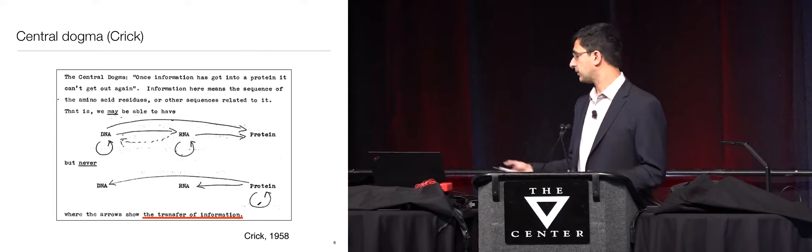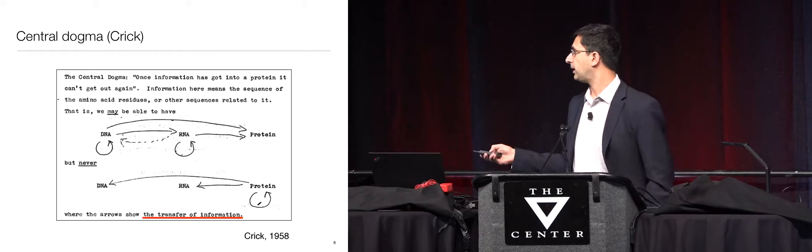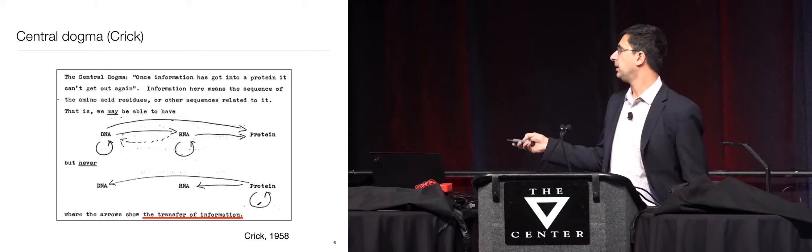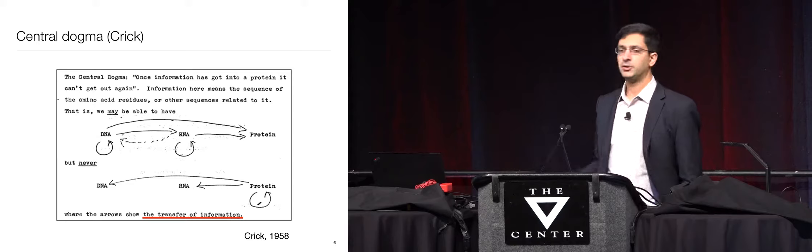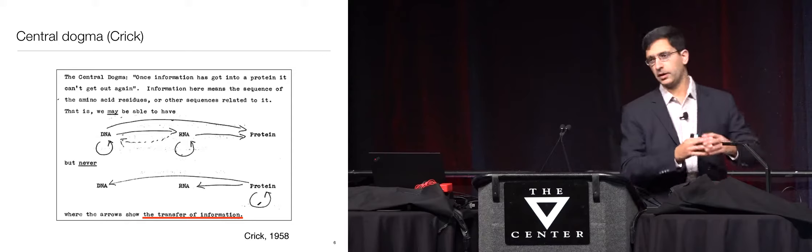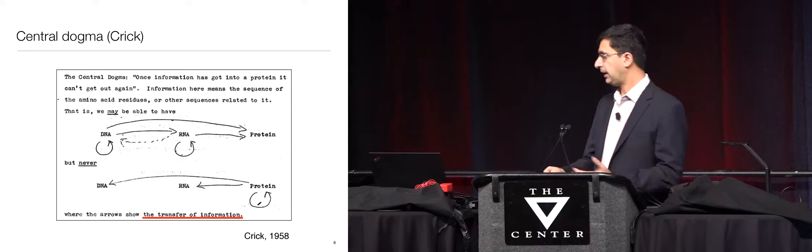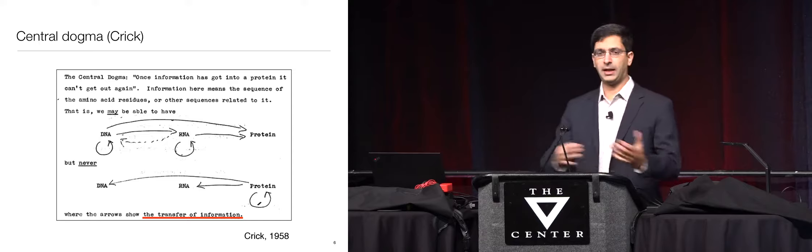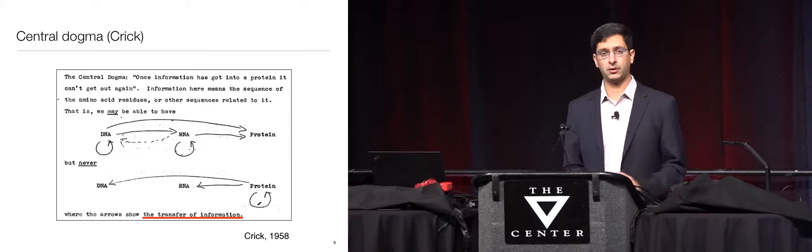Shortly thereafter, Crick formulated what's now known as the central dogma in biology — that information flows only in one direction, from nucleic acids to protein, via an intermediate molecule called RNA, which is made as a copy of portions of the DNA and then translated via some code to make protein. It's difficult to put oneself in the mindset of the 1950s, but biologists had no idea what this code was. They now had a sense that there are four nucleic acids and 20 amino acids, but how one relates to the other was completely unclear.